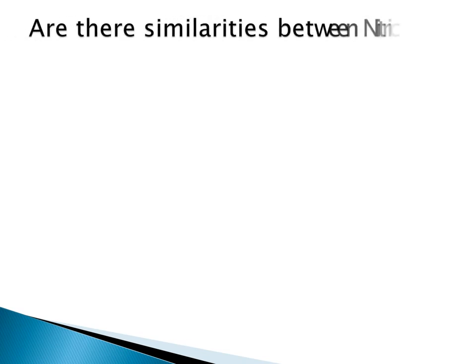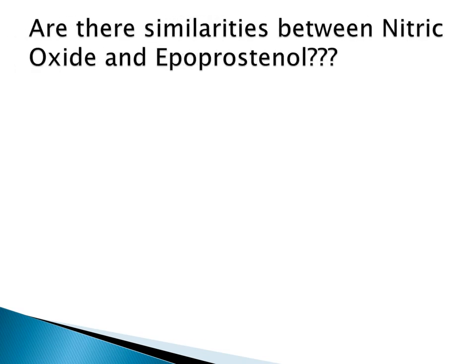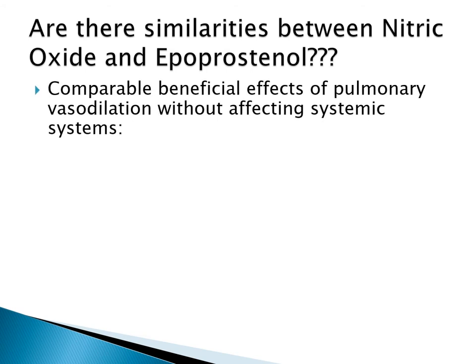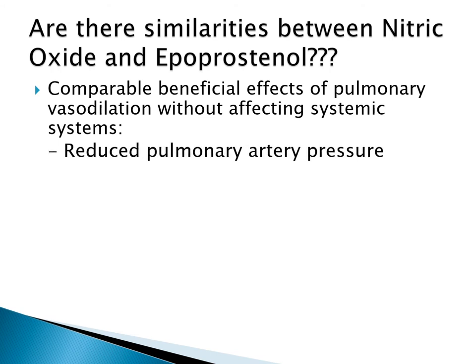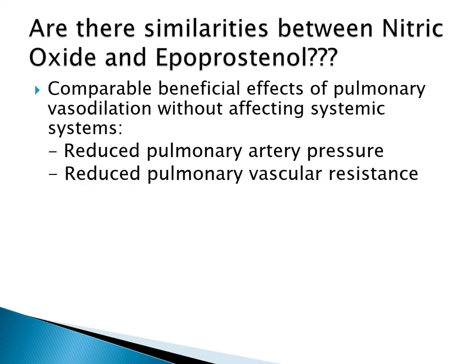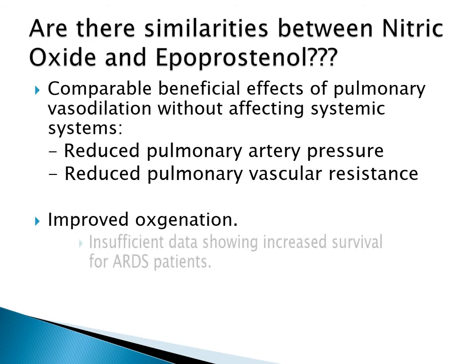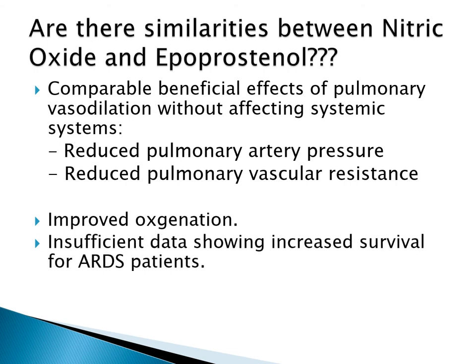A common question relates to similarities and differences between Flolan and inhaled nitric oxide. They have a roughly comparable beneficial effect on pulmonary vasodilation without affecting systemic vasculature. Both aim to reduce pulmonary artery pressures and pulmonary vascular resistance, resulting in improved oxygenation. However, there is insufficient data showing increased survival for ARDS patients with either drug.